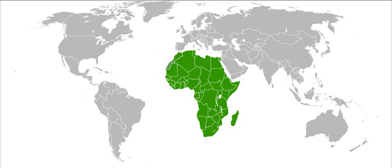The African Union covers almost the entirety of continental Africa and several offshore islands. Consequently, it is wildly diverse, including the world's largest hot desert, huge jungles and savannas, and the world's longest river.